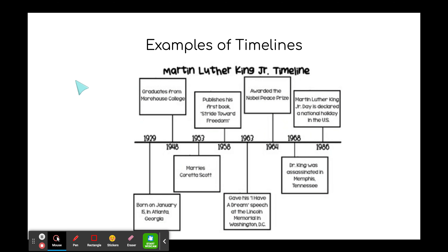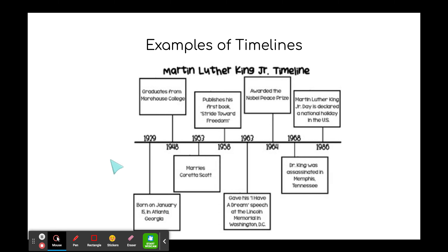An example of a timeline is here — the title is the Martin Luther King Jr. Timeline. If you notice, there is a line with dates. All of the dates are in order from the earliest to the latest. So we have 1929, 1948, 1953, and so on. These are all important events in Martin Luther King Jr.'s life.